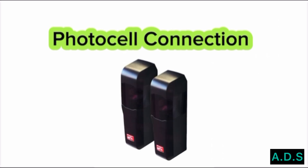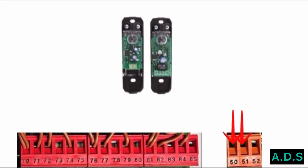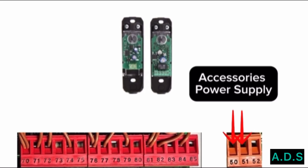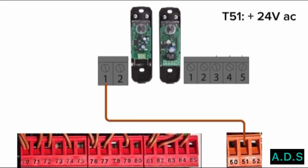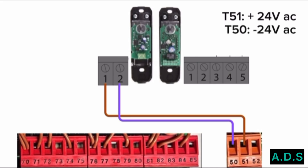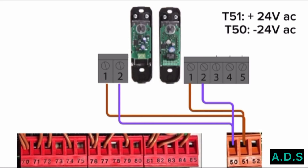Photocell connection. Terminals 50 and 51 — accessories power supply output. Terminal 51 connects to TX photocell pin 1; terminal 51 is the 24 volt AC phase power. Terminal 50 connects to TX photocell pin 2; terminal 50 is the 24 volt AC negative power. Terminal 51 connects to RX photocell pin 1 — terminal 51 is the 24 volt AC phase power. Terminal 50 connects to RX photocell pin 2.